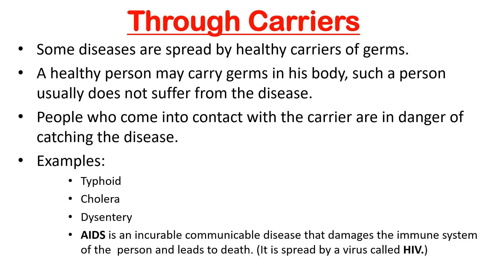Diseases spread through carriers: some diseases are spread by healthy carriers of germs. A healthy person may carry germs in their body but usually does not suffer from the disease, while people who come into contact with the carrier are in danger of catching it. Examples include typhoid, cholera, and dysentery. AIDS is also an incurable communicable disease that damages the immune system and leads to death; it is spread by a virus called HIV.